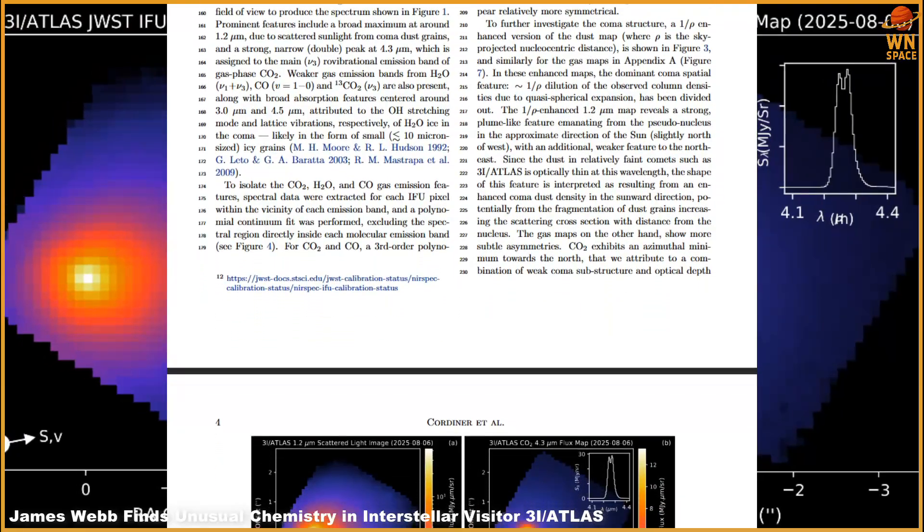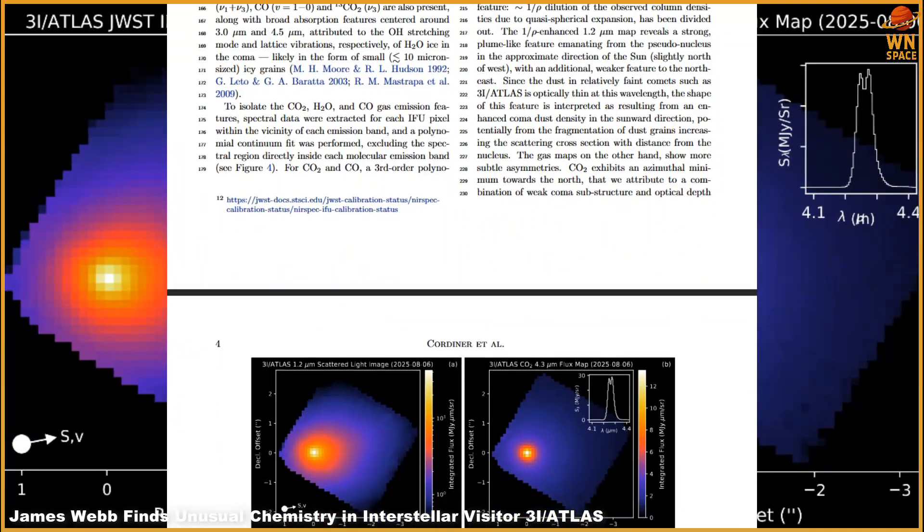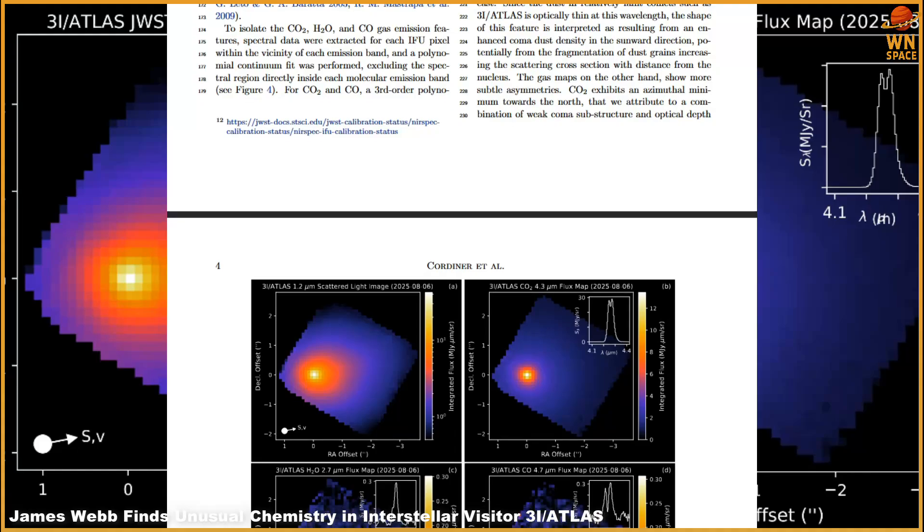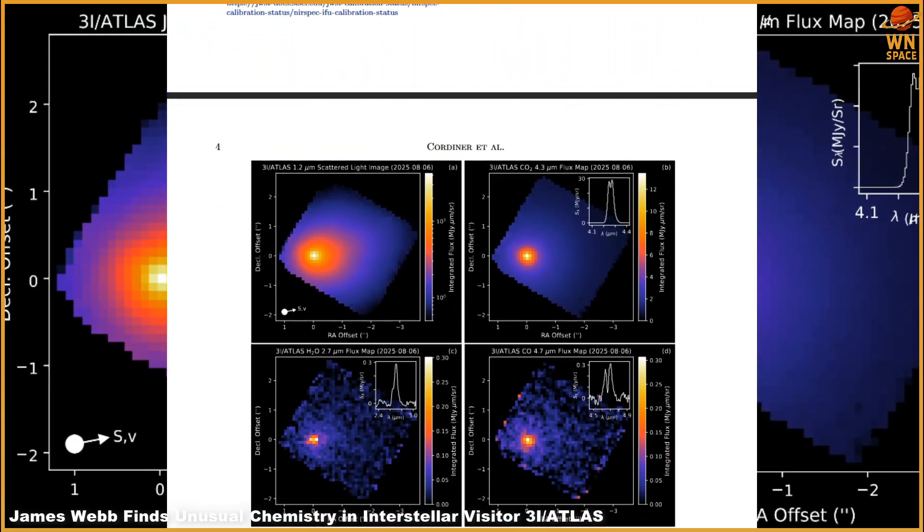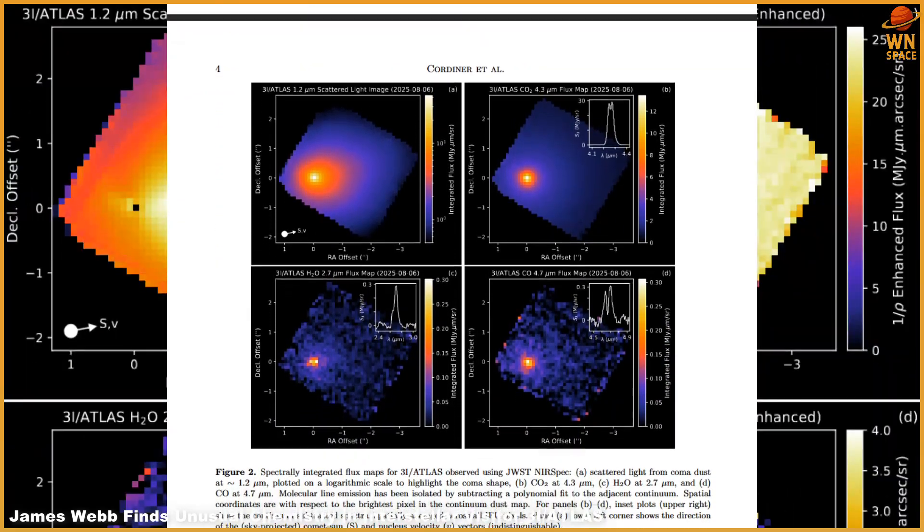The ratio of carbon dioxide to water is especially striking, around eight times higher than what we typically see in solar system comets.